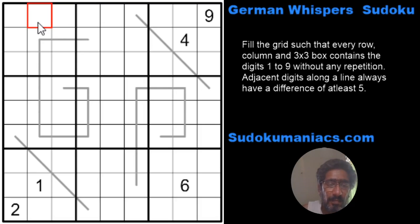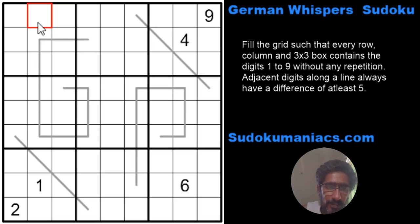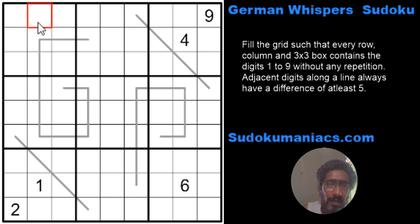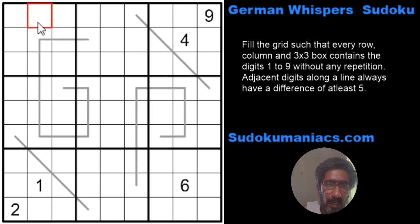Hey guys, welcome back to the second puzzle for the series of the Sudoku Grand Prix 7, hosted by the Germans and the Dutch authors together. Earlier we had seen the numbered rooms by Richard, and now we are going to have a look at the German Whispers Sudoku. This was created by Jonas Gleim. I hope I got that name right — apologies if I didn't.